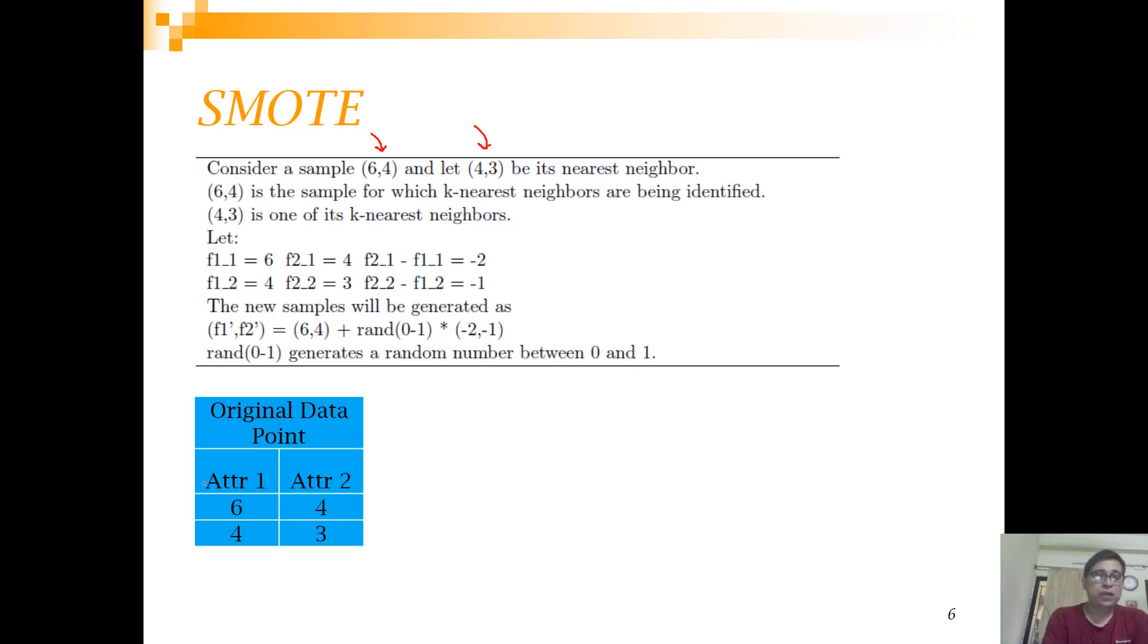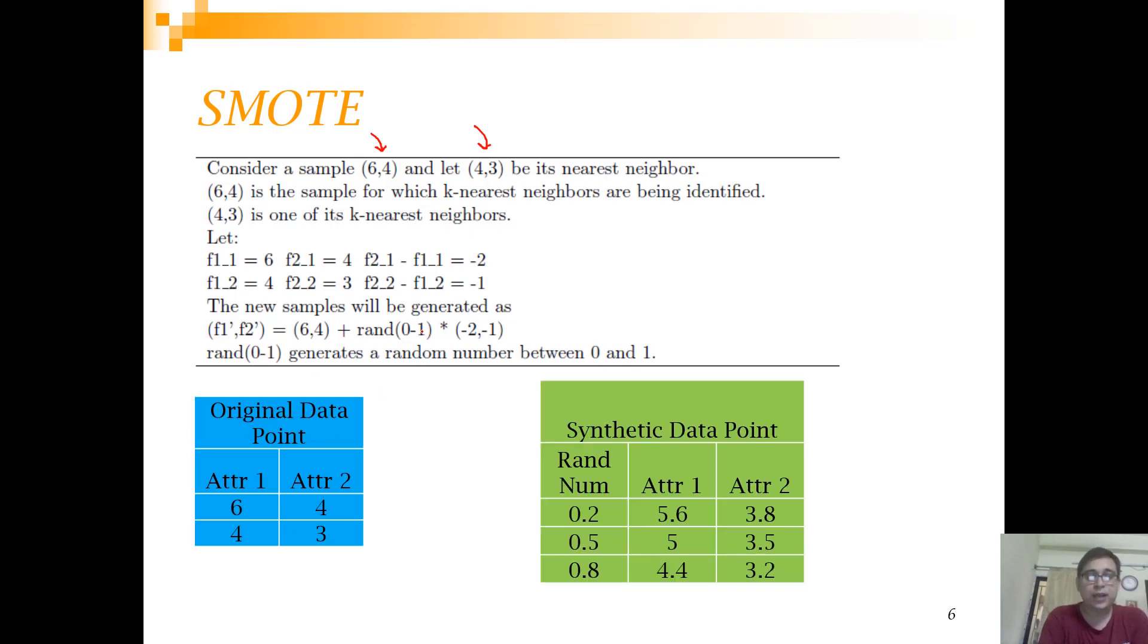Let's say these are the two points: six, four and four, three. What I am going to do is I am going to create a random number between zero to one. The random numbers generated are 0.2, 0.5, and 0.8. Then what I am going to do is I am going to take the difference between these. So I am going to concentrate on four minus six, so that's how we get this minus two, and three minus four, so that's how we get this minus one, and multiply by this random number. What I get is 5.6 and 3.8 when I have 0.2. When I have 0.5, I get 5 and 3.5, and this is for 0.8.